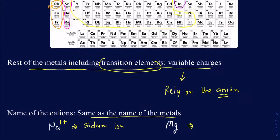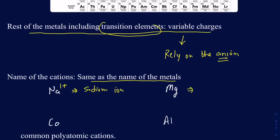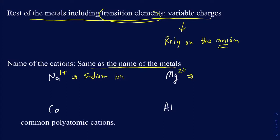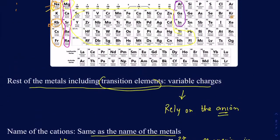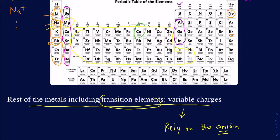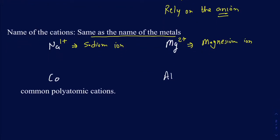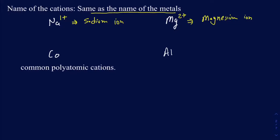What about magnesium? Magnesium is in Group 2A, so it loses two electrons and gains a 2+ charge — that's the magnesium ion. What about cobalt? Cobalt is a transition element with variable charges, so I don't really know the charge without its anion. But let's assume it gets a 2+ — even so, it's still going to be called the cobalt ion. And aluminum is in Group 3A, loses 3 electrons, gets a 3+ charge, and is called the aluminum ion.